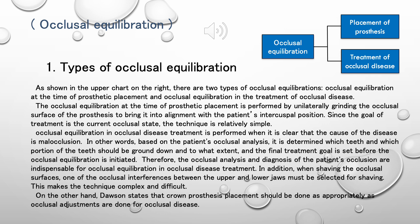In addition, when shaving the occlusal surfaces, one of the occlusal interferences between the upper and lower jaws must be selected for shaving. This makes the technique complex and difficult. On the other hand, Dawson states that crown prosthesis placement should be done as appropriately as occlusal adjustments are done for occlusal disease.